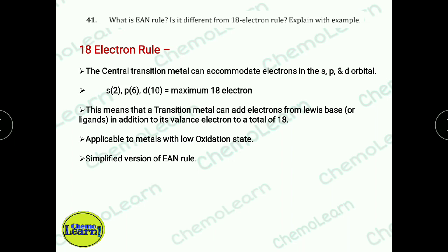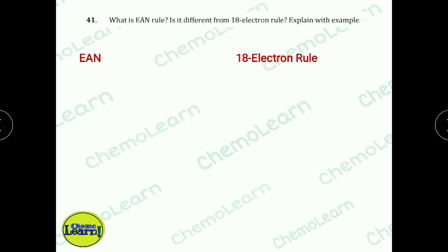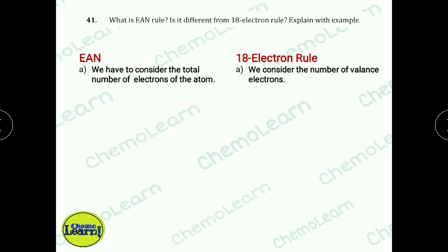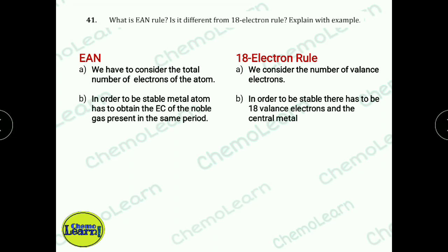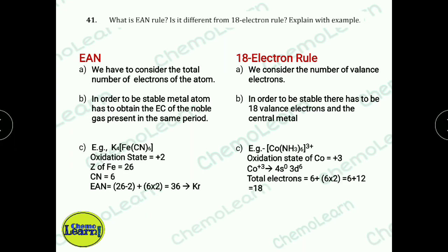Now, what is the difference between the EAN rule and the 18-electron rule? First, in EAN we count the total number of electrons in the complex, but in the 18-electron rule we count only the valence shell electrons. Second, in EAN the complex is stable when total electrons coincide with the nearest noble gas atomic number (e.g., 36 for Krypton), whereas in the 18-electron rule the complex is stable when the valence shell has exactly 18 electrons. In this example, the EAN total is 36 but valence shell count is 18 — both indicate stability.